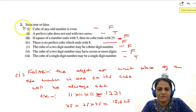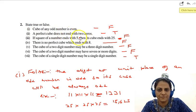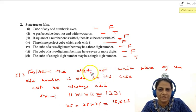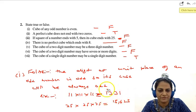The question says, state true or false. First part is, cube of any odd number is even. This is false because the digit at unit place of an odd number is odd. So when we find out the cube of that number, we will always get an odd number. For example, 11 cube is 1331 because 1 is the odd number at unit place. So the cube also is having 1 at the unit place which is odd. 25 cube is 15625. Again, 25 is odd, 15625 is also odd.